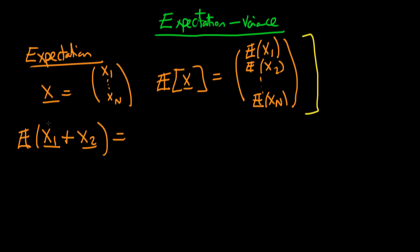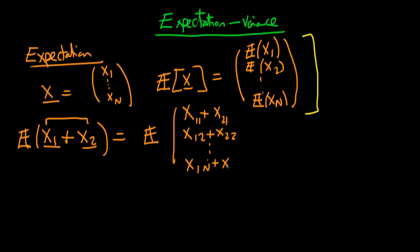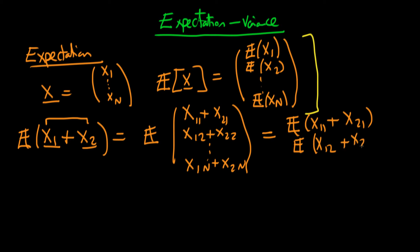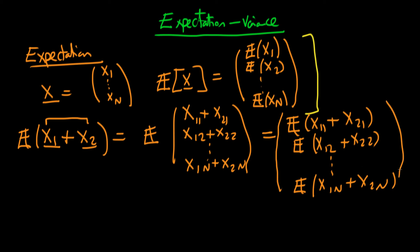The first step is where we combine each of the two vectors element-wise. So we're taking the expectation of a vector whose top element is x1,1 plus x2,1; the second element is x1,2 plus x2,2; all the way down to x1n plus x2n. And then, because of the way the expectations operator is defined on a random vector, this is just the vector of expectations: E[x1,1 + x2,1], E[x1,2 + x2,2], continuing down to E[x1n + x2n].